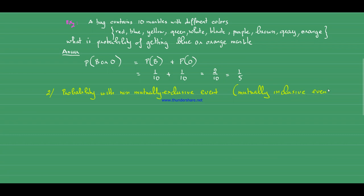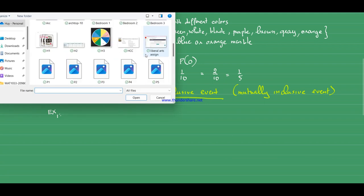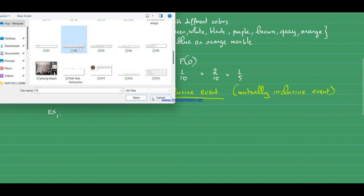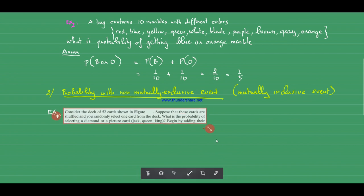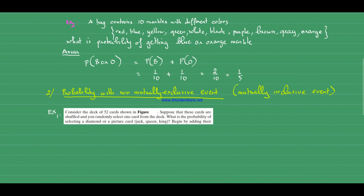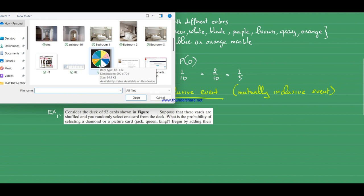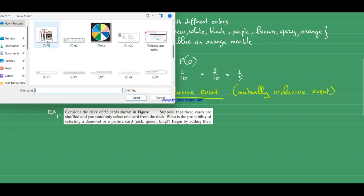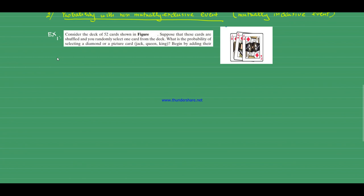Now the second type of probability is the non-mutually exclusive event. It means that in these two events they have something in common. Let's look at an example with cards.